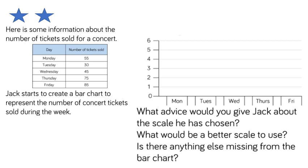Jack starts to create a bar chart to represent the number of concert tickets sold during the week. Look at Jack's bar chart on the right. What advice would you give Jack about the scale he has chosen? On the vertical axis his scale goes up in steps of one — what would be a better scale to use? Is there anything else missing from the bar chart? Pause the video to answer the questions.